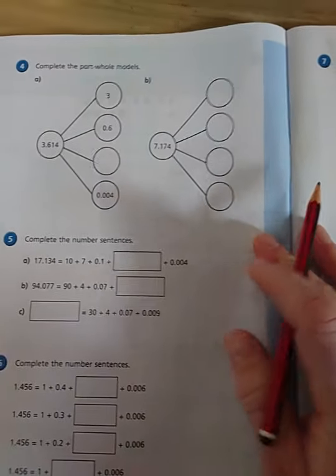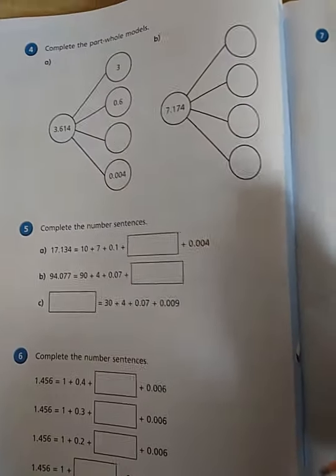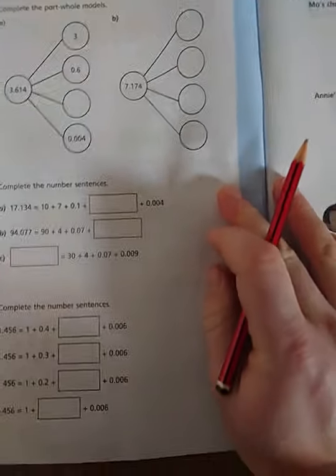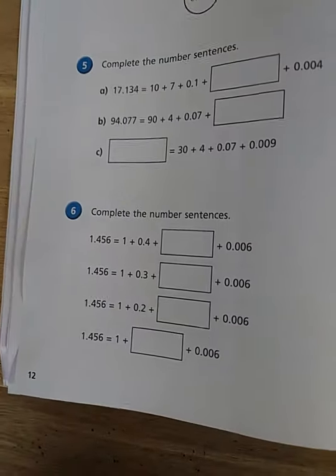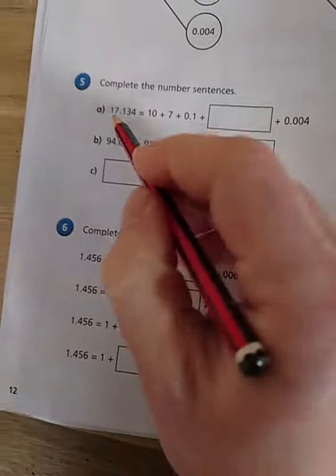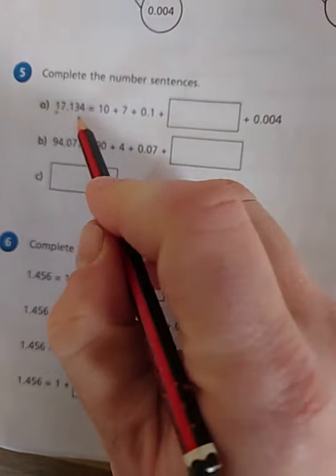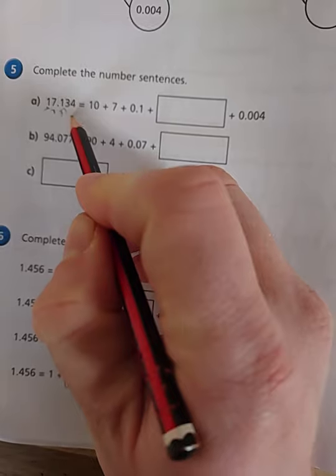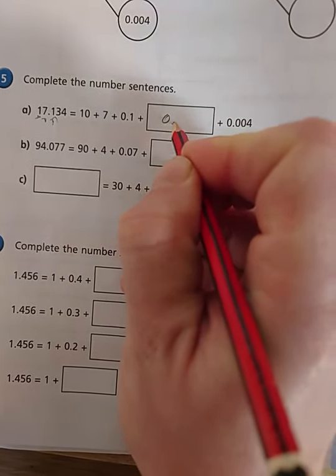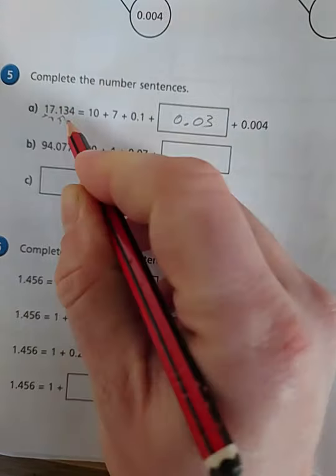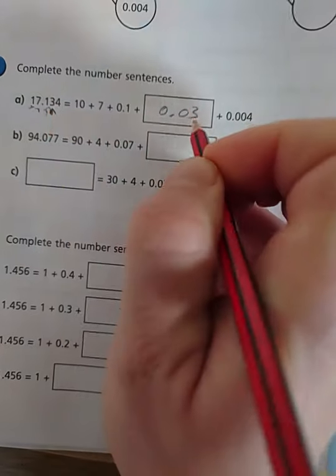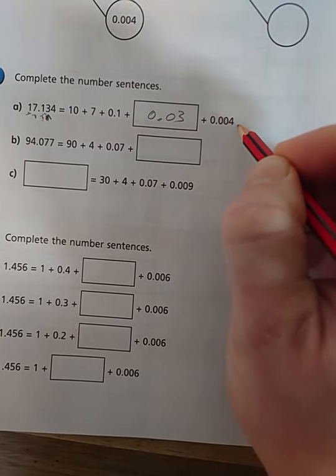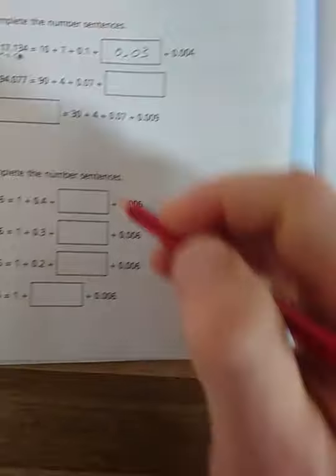Complete the whole parts of these models. I mean, that's just partitioning. Hopefully that makes sense. And then these ones, this is quite nice. Again, it's partitioning. So it's 10 plus 7 plus 0.1 plus 0.03. That's what that one's worth. Plus 0.004. Hopefully that makes sense.